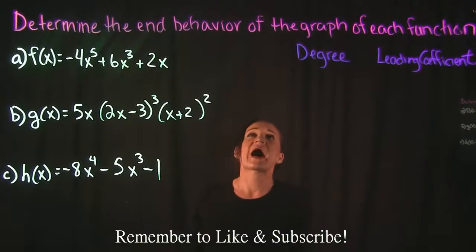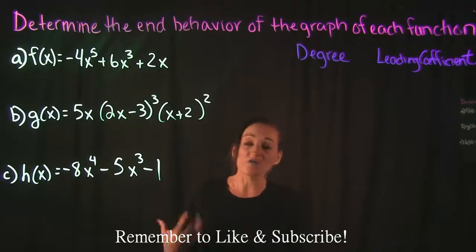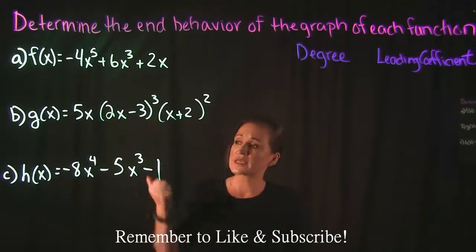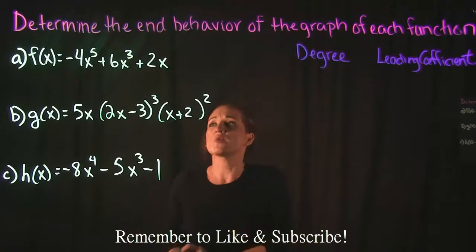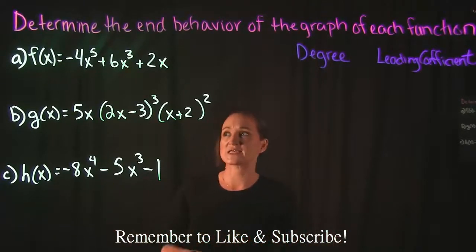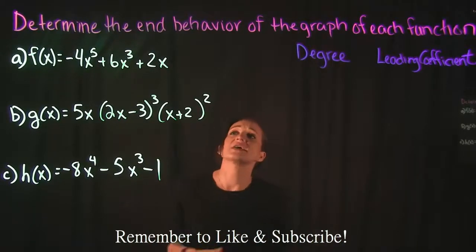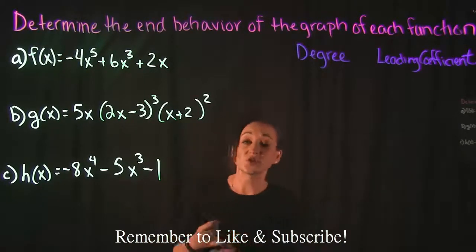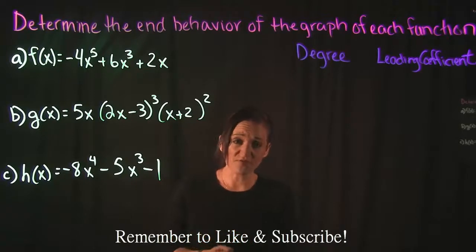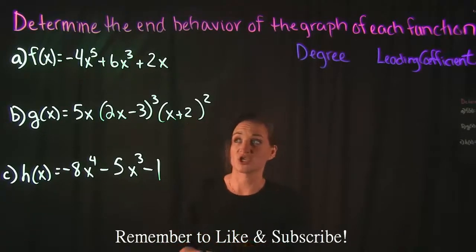This video is going to focus on how we determine the end behavior of a graph of a given function. We have three examples that we're going to go over, and we want to know what is the end behavior — what is the graph going to look like at its endpoints. The way that we do that is by looking at the degree of the function and by looking at the leading coefficient of the function.